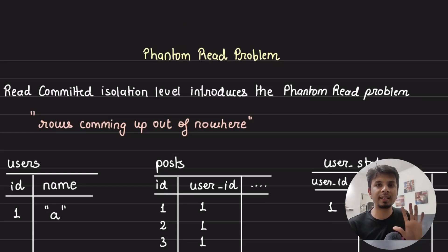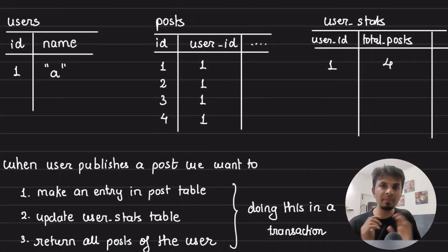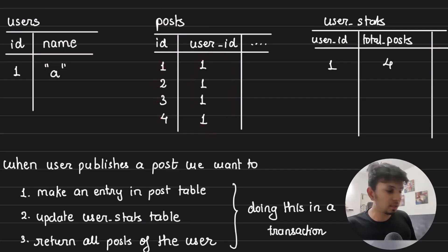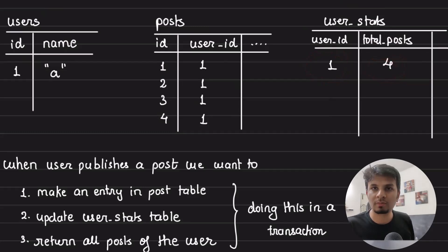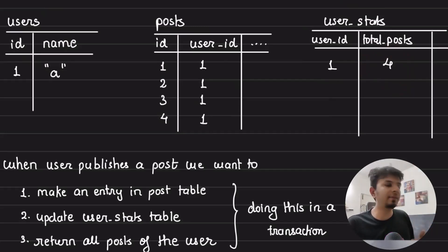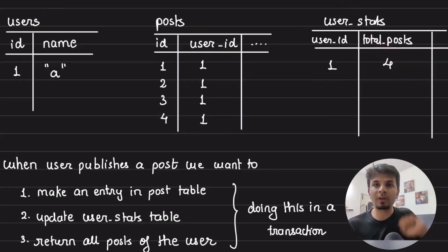Let's jump into it with a detailed example of understanding what the phantom read problem is. In order to understand, we'll go through a particular schema and mimic a situation. Let's say we have a social media website with a users table containing id and name, a post table storing all posts made by a user with post id and user id, and a user stats table storing how many posts a user has made.